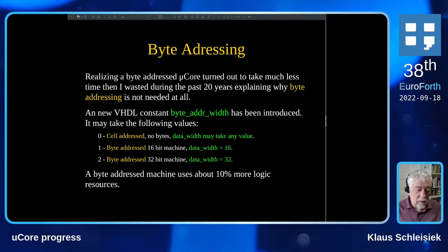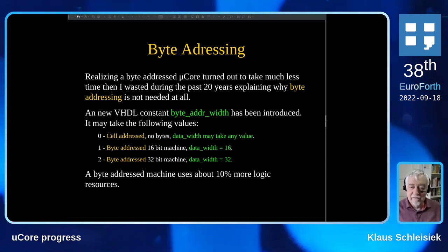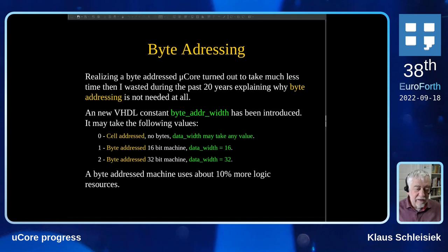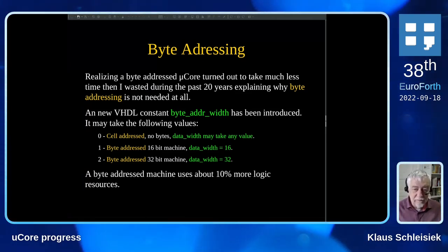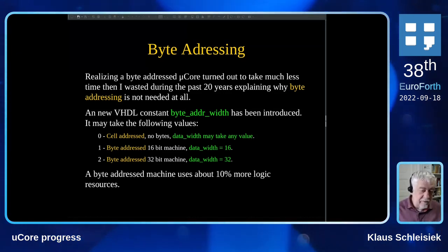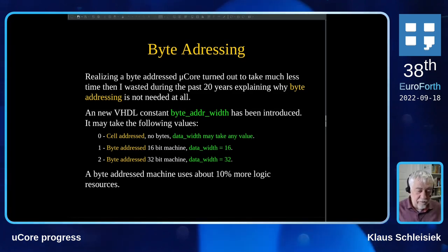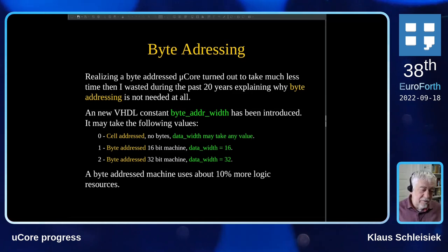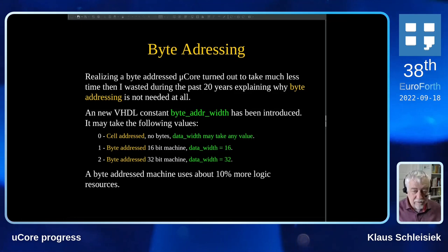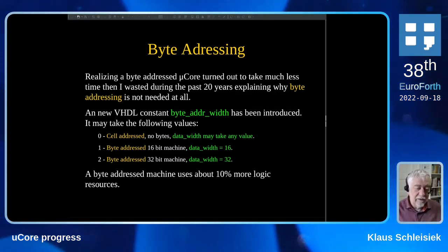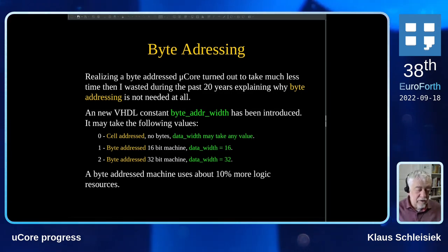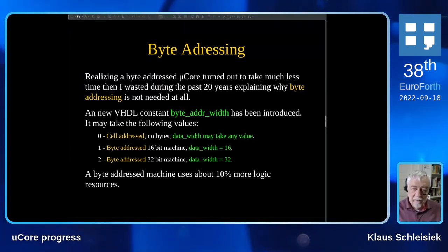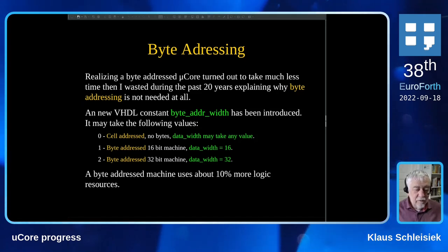A new VHDL constant called byte_address_width has been introduced and it may take the following values: zero, meaning no bytes, everything as before — a cell-addressed machine where the data width may be any width, practically from 10 bits up to 32 bits with the present cross compiler, and later 64 bits when the compiler runs on a 64-bit system. If byte_address_width is 1, we have one bit to address a byte, meaning a 16-bit machine with data width set to 16. If byte_address_width is 2, you need to address 4 bytes, and data width must be set to 32.